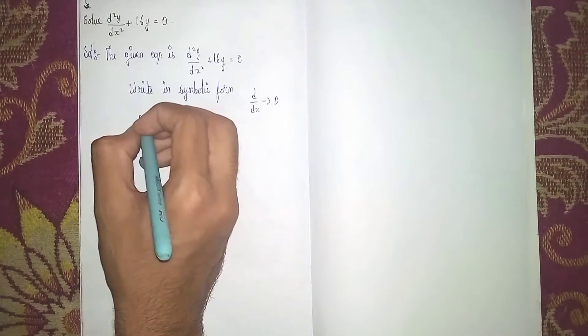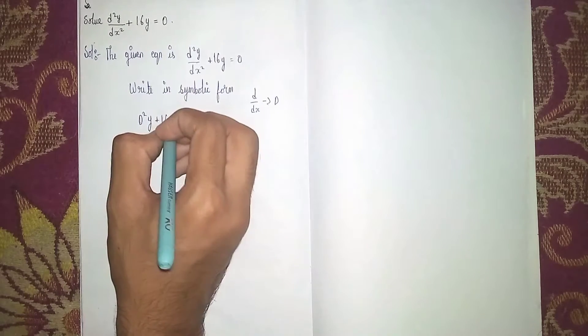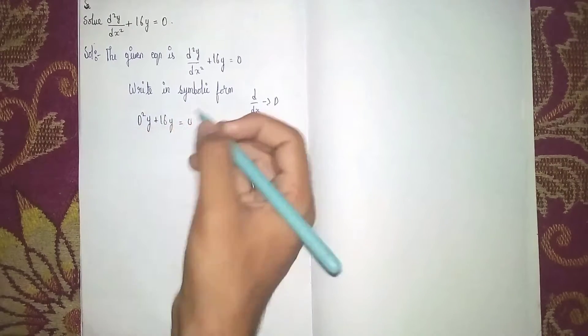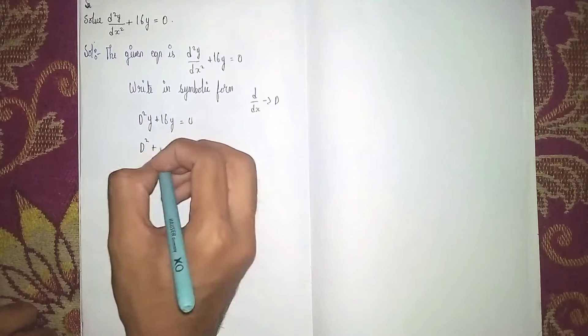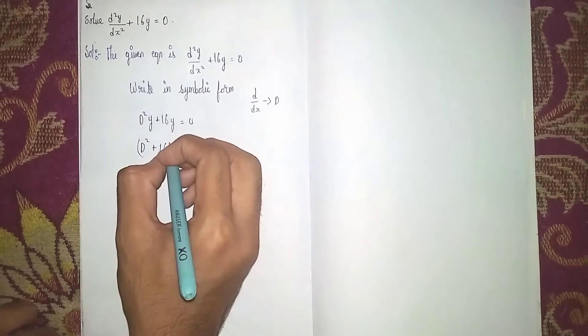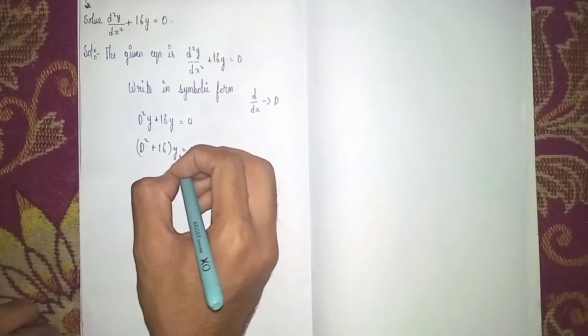That becomes D squared y plus 16y equal to 0. Now I'm taking y as common, so here it becomes D squared plus 16 into y is equal to 0. If you send this y to this side, it becomes 0. The equation is D squared plus 16 is equal to 0.